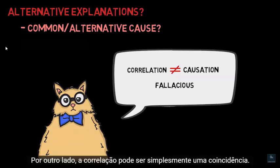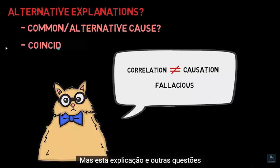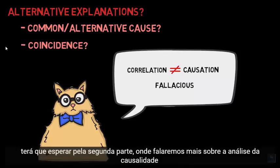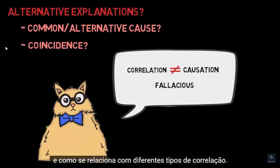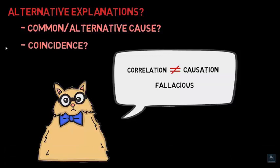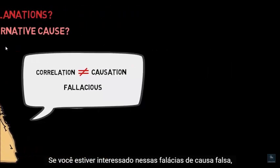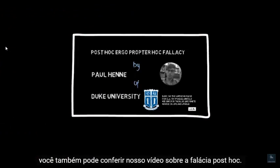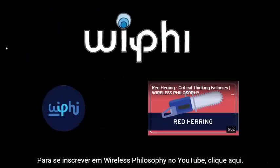On the other hand, the correlation might simply be a coincidence. But this explanation and other questions will have to wait for part two, where we will talk more about the analysis of causation and how it relates to different types of correlation. If you're interested in these false cause fallacies, you may also want to check out our video on the post-hoc fallacy. Thank you for watching. To subscribe to Wireless Philosophy on YouTube, click here.